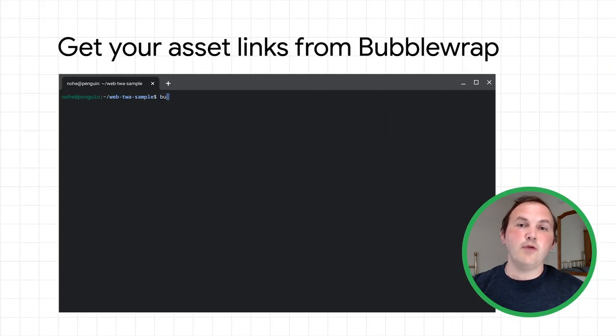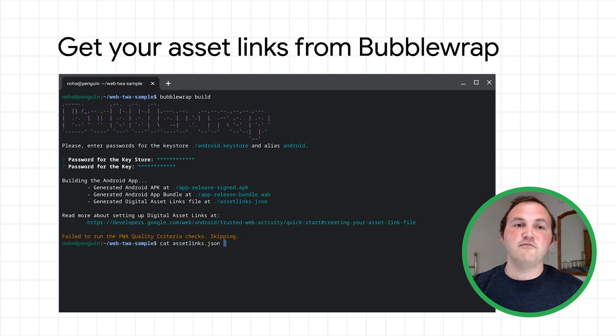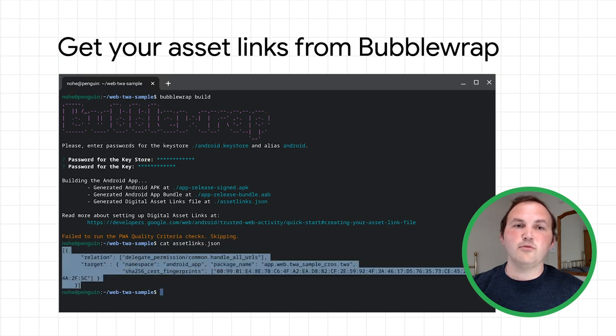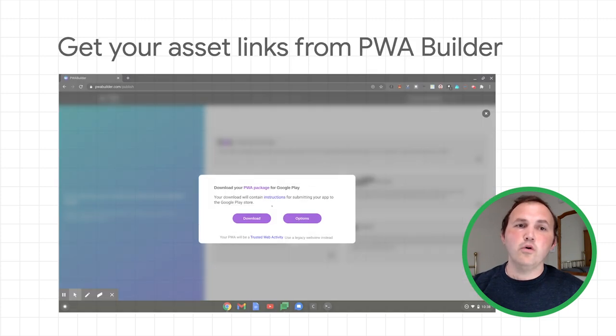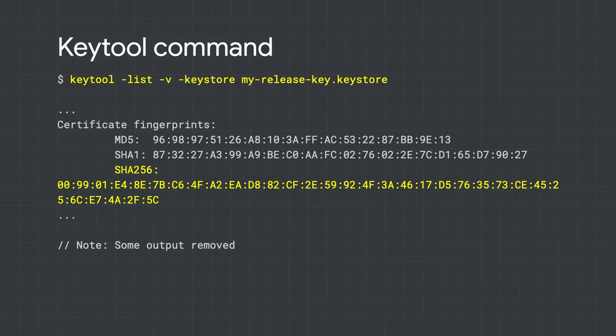If you are using Bubble Wrap or PWA Builder to generate your trusted web activity, you will find that your assetlinks.json are generated for you in either your project directory from Bubble Wrap or in your downloaded zip file from PWA Builder. When writing the project from scratch, you need to generate the assetlinks.json file yourself. You can generate a SHA-256 fingerprint through the following command shown on the screen. More instructions on the key tool command are listed in the description below.